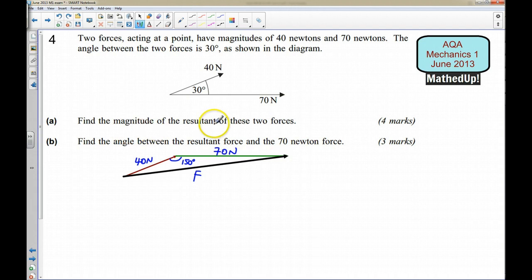So to find the magnitude of the resultant force, well because I've got a non-right angled triangle here, I've got two lengths and I know the angle in between, so it looks like I'm going to use the cosine rule for this.